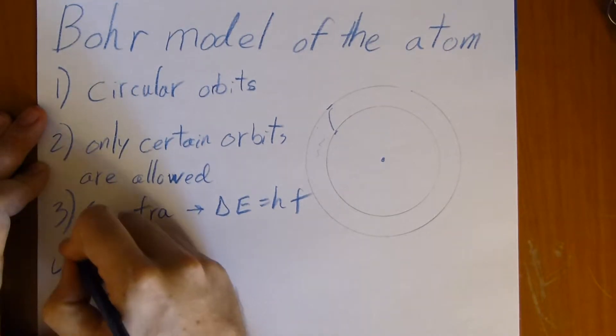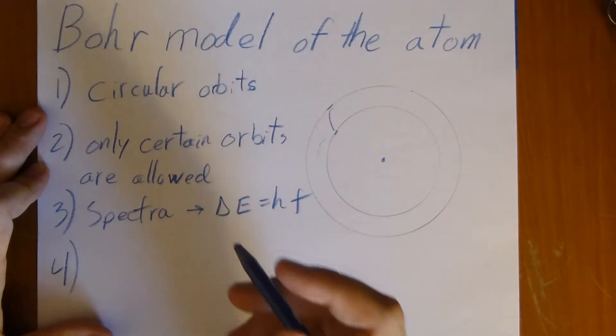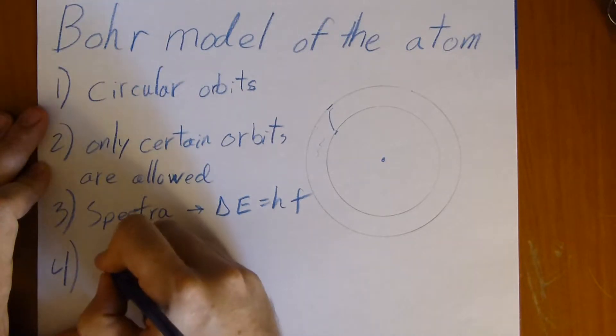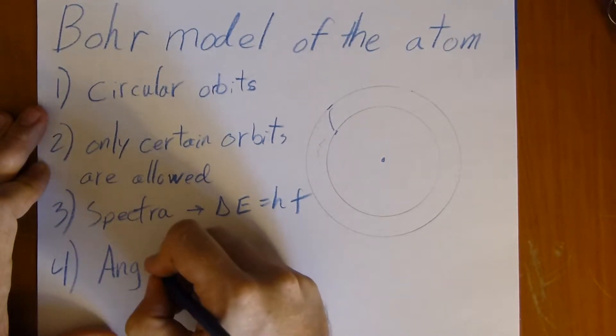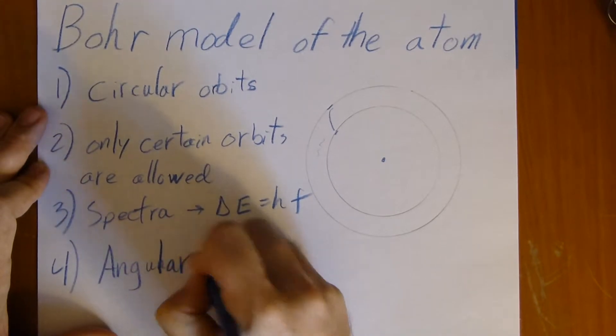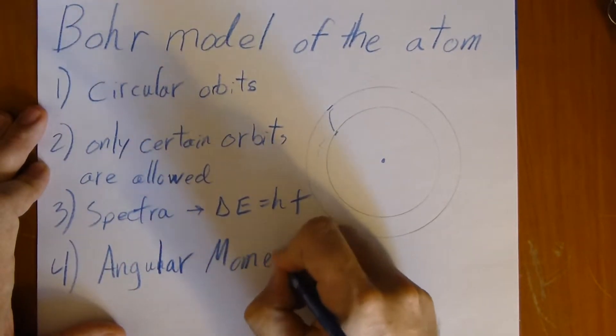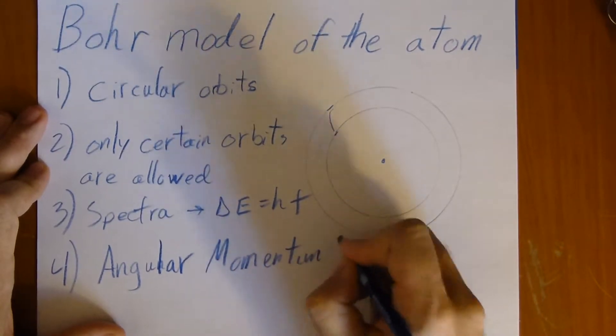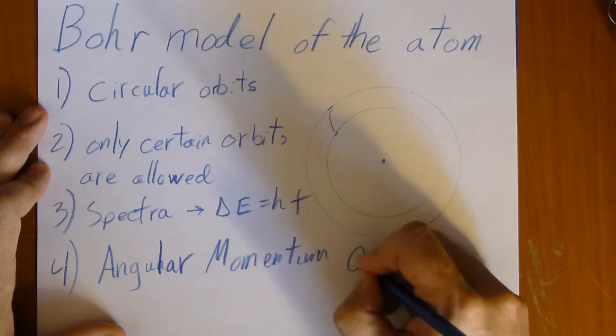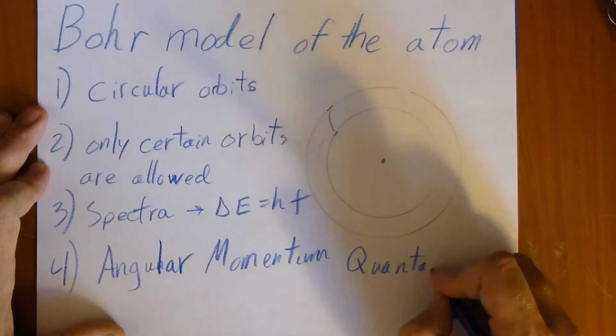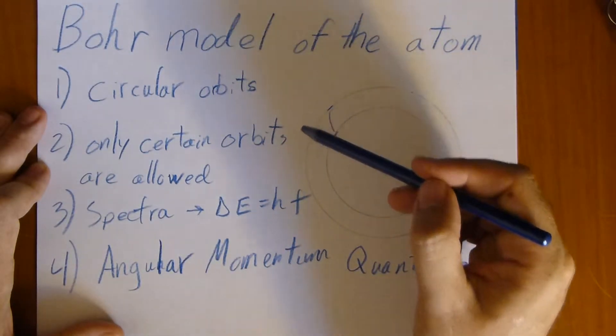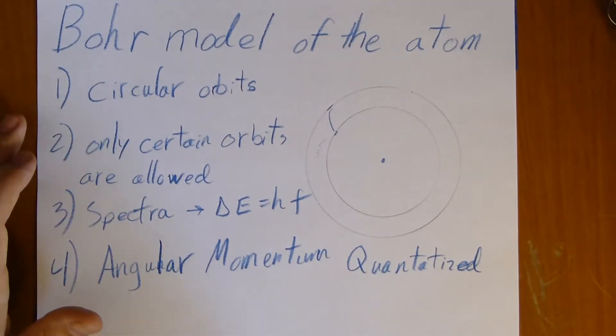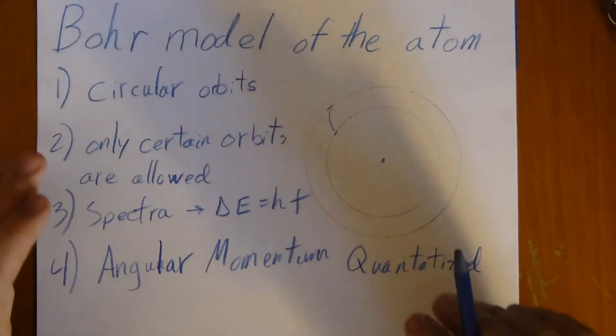And Bohr's real insight, and this was all very good, crown jewel is that this is all determined by angular momentum, angular momentum quantization. Which is to say that the angular momentum is quantized in certain amounts, in certain set amounts. Which is what makes quantum theory different from other theories.